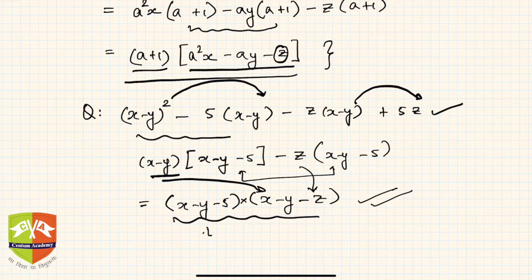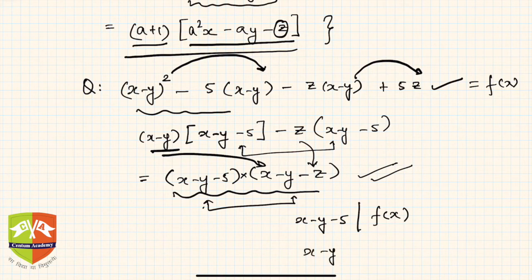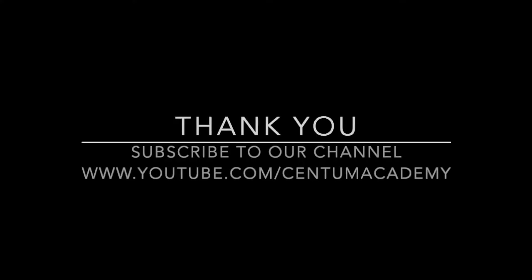In the last session we discussed this. We can write that (x-y-5) divides, let's say this entire thing was f(x), so instead of writing the full thing I'm writing (x-y-5) divides f(x). Similarly, (x-y-z) divides f(x). So I hope you understood the method.